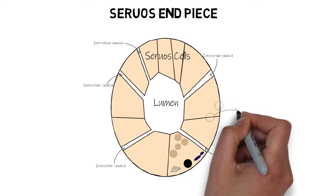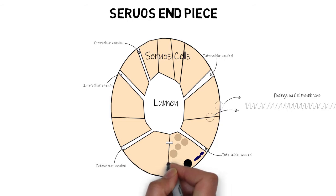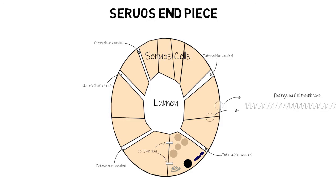The cell membranes of serous cells display an important feature: they have regular folds which greatly increase the surface area of the cells. Also present in the cell membrane are various cell junctions, which enable adjacent cells to be joined to one another and to the basal lamina. These junctions allow passage of small molecules and ions between adjacent cells, helping coordinate the activities of all cells within a single end piece, creating a single functional unit.